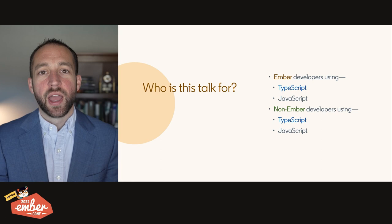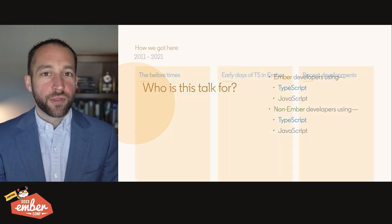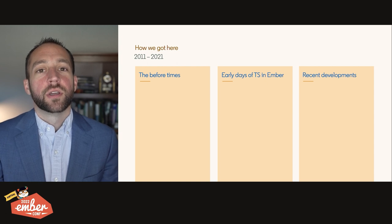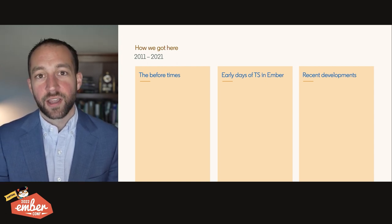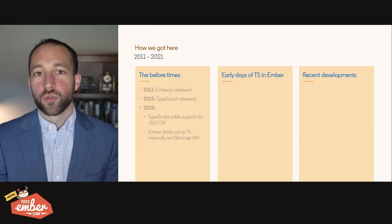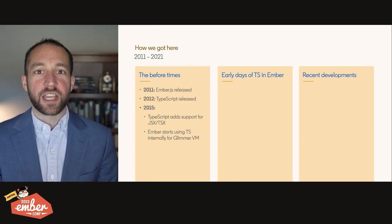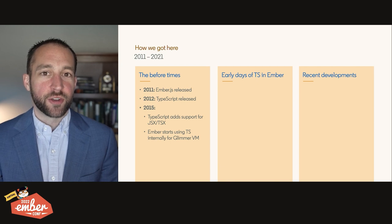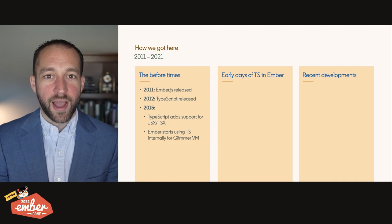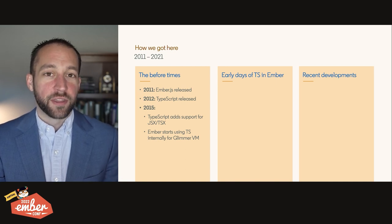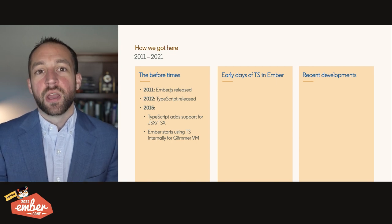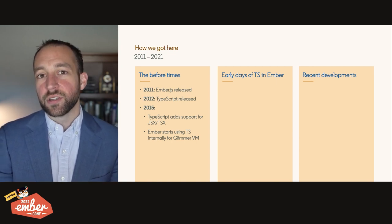So let's jump in. How did we get here? There are three broad eras to Ember's history with TypeScript: the before times, the early days, and recent history. The before times run from 2011 through about 2015. Ember itself appeared in 2011, TypeScript appeared in 2012, and they ran in parallel without much overlap other than collaborating on the start of the decorator's proposal back in 2014, until a couple key things happened in 2015.